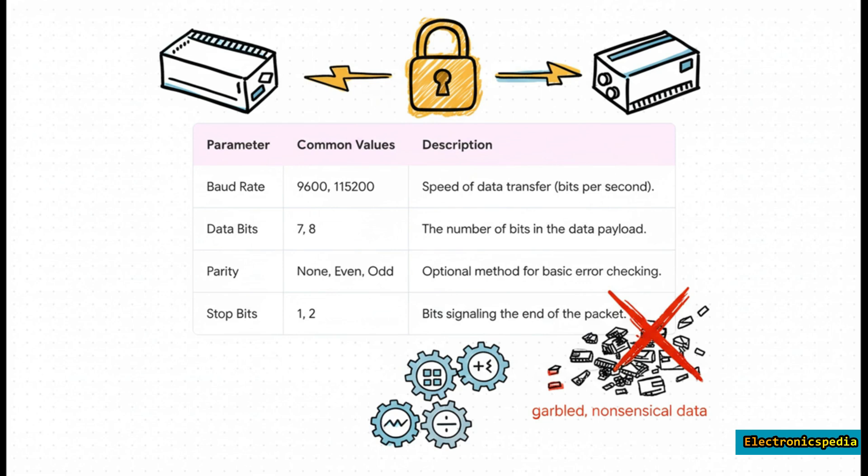A mismatch, especially in the baud rate, is the number one cause of problems. If one side is talking at 9600 bits per second and the other's listening at 115,200, you're not going to get a conversation. You're just going to get a bunch of digital gibberish.